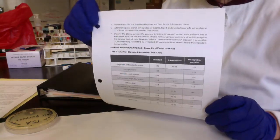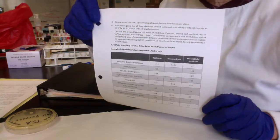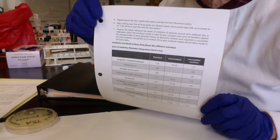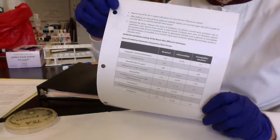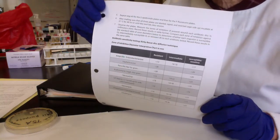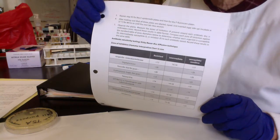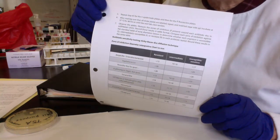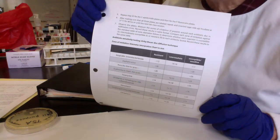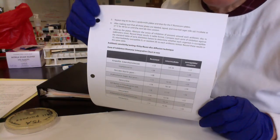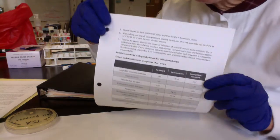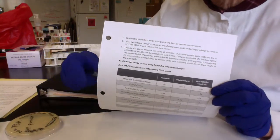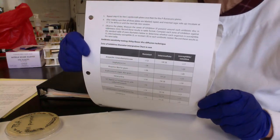When talking about antibiotic sensitivity testing against human bacterial pathogens, we have an additional challenge: we have to know what concentrations of antibiotics we can safely achieve in our patients — what therapeutic levels we can safely reach. The challenge is that for any given bacterial pathogen, we need to know the MIC for a specific antibiotic and whether we can actually achieve that MIC level in the patient.